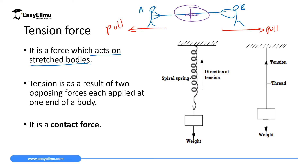Tension force is also experienced in springs. When you tie a mass at one end of a spring and tie the spring to a stand or clamp, the weight of the body stretches the spring downwards, while the clamp pulls the spring upwards. The force experienced inside the spring pulling the weight upwards is the tension force. Similarly, if you tie a thread to a ceiling and hang a mass from the other end, the thread experiences tension force upwards as the mass pulls it down.